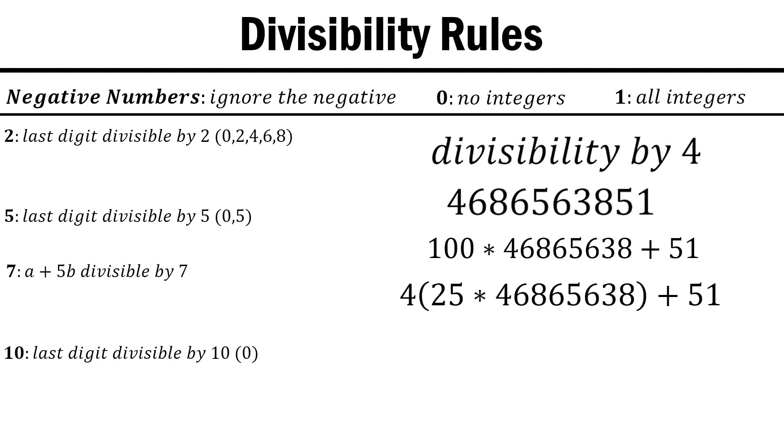We do this since 100 is divisible by 4, so this whole product is as well. You can probably start to see the pattern here. We use the information given by the digits to split up our number into as large a multiple of 4 as we can, plus a much smaller remainder.